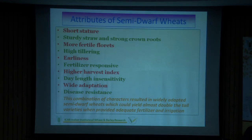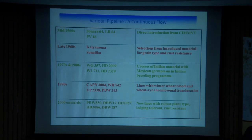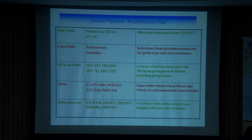Once the system was in place, crossing and hybridization programs started. Every decade you find some mega cultivars developed across India from different institutions. For example, Sonora 64, PV18, and LR64 were from Mexico, and Kalyan Sona and Sonalika derived from them. Variety nomenclature denotes where they were developed: HD stands for Hindi Delhi, WL for Wheat Ludhiana, WG for Wheat Gurdaspur, CW for the coordinated wheat program, WH for Wheat Hissar, UP for Uttar Pradesh wheat, PBW for Punjab red wheat.